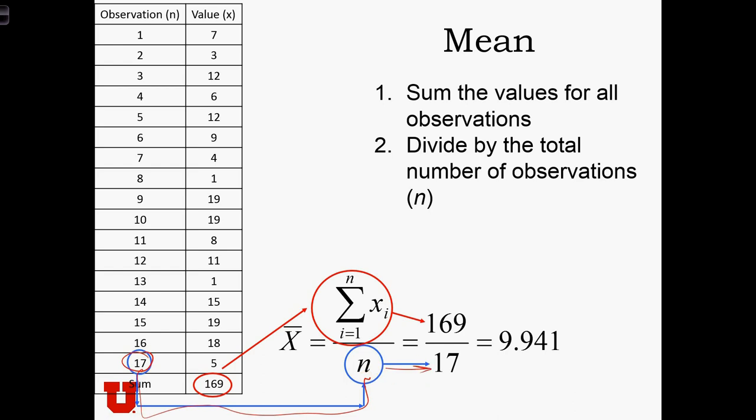Now the next thing that we're going to have to do to calculate x̄, to calculate the mean, is sum all the values for all the observations. So here we are taking a sum of this column: 7 plus 3 plus 12 and so on. When we find that sum, we find it equals 169. So to calculate x̄, we're going to take the fraction 169 over 17, which equals 9.941.